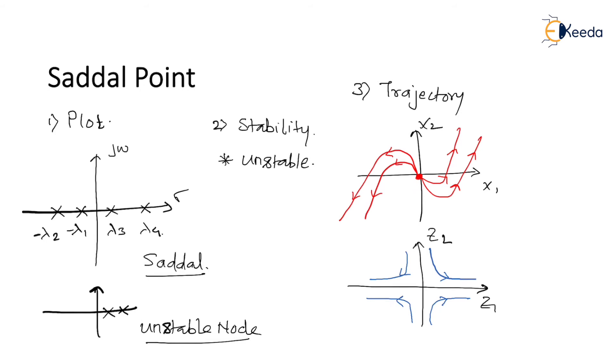Now we know that, as I have said in my previous videos, that out of 100 poles if 99 poles are on the LHS of the S plane and if any one pole is on the RHS of the S plane, the system by default is unstable in nature. Hence in the case of saddle point...